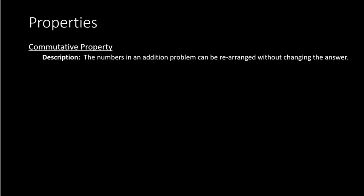This property says that the numbers in an addition problem can be rearranged without changing the answer. For example, we have 5 plus 4. That is the same thing as 4 plus 5. Notice the order of the numbers that we are adding does not change the final answer. So that is your commutative property.